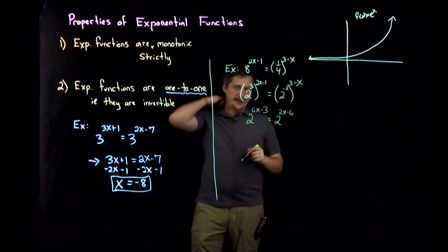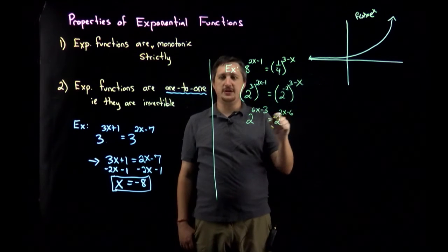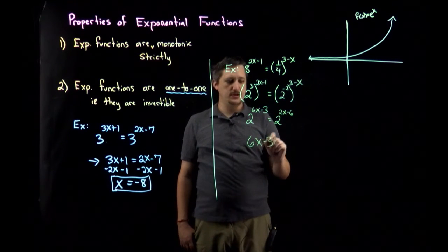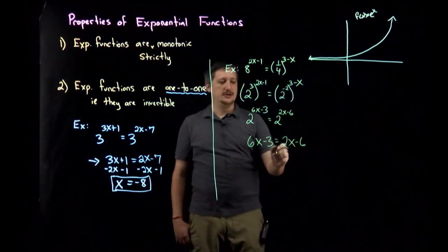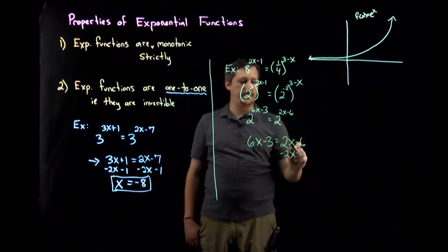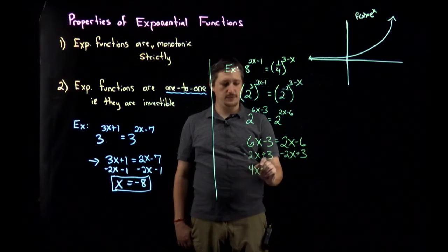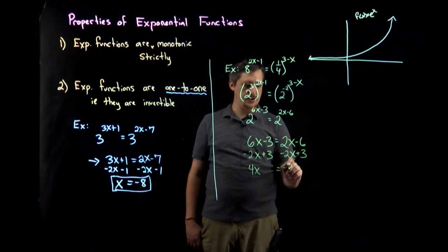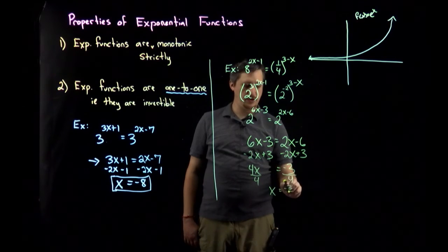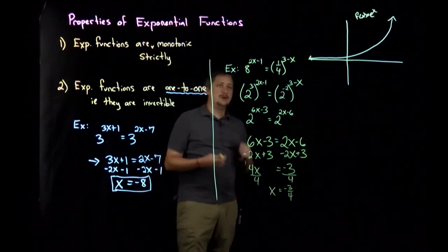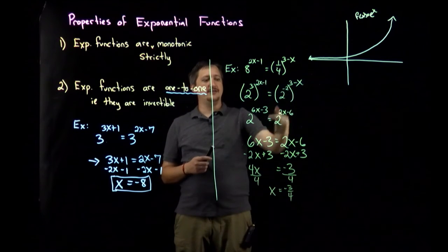And now I can see that I have the same base to different powers, so I can write these powers as being equal: 6x-3 = 2x-6. I'm gonna subtract 2x from both sides and add 3 to both sides, so on this side I'm gonna have 4x, and on this side I'm gonna have -3. Divide both sides by 4: x = -3/4.